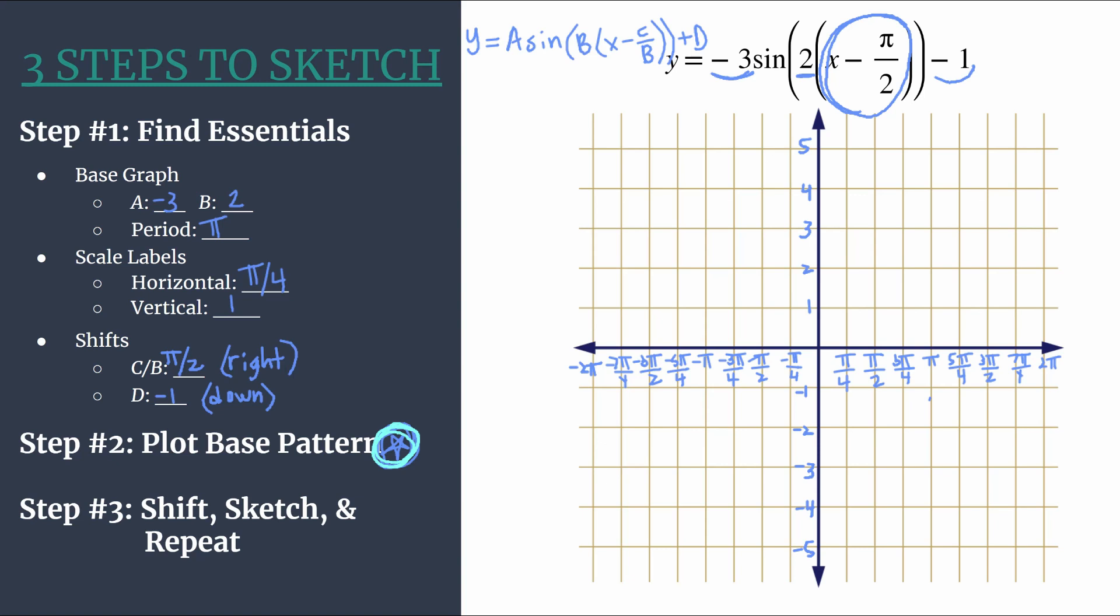So instead of following the base pattern of the parent graph y equals sine x, which is just zero maximum, zero minimum, zero minimum. It'll be the flip of that. It'll be zero minimum, zero maximum. So that will take care of the reflection.